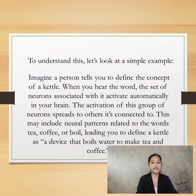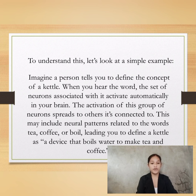To understand this, let's look at a simple example. Imagine a person tells you to define the concept of a kettle. When you hear the word, the set of neurons associated with it activate automatically in your brain. The activation of this group of neurons spreads to others it's connected to. This may include neural patterns related to the words tea, coffee, or boil, leading you to define a kettle as a device that boils water to make tea and coffee.